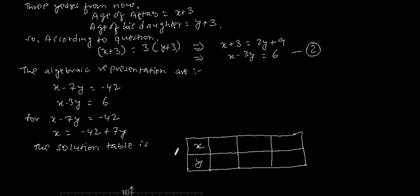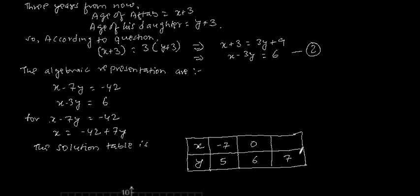By putting any value for y, we get the corresponding value of x. If y equals 5, then x equals minus 7. If y equals 6, then 7 times 6 is 42, so minus 42 plus 42 equals 0, giving x equals 0. If y equals 7, then 7 times 7 is 49, so minus 42 plus 49 equals 7, giving x equals 7.